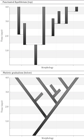Punctuated equilibrium has also been cited as contributing to the hypothesis that species are Darwinian individuals, and not just classes, thereby providing a stronger framework for a hierarchical theory of evolution.